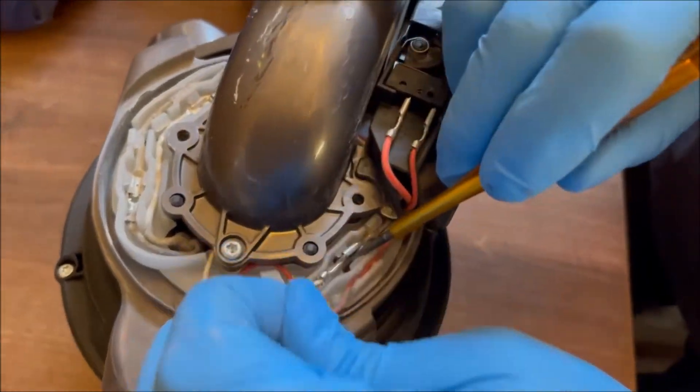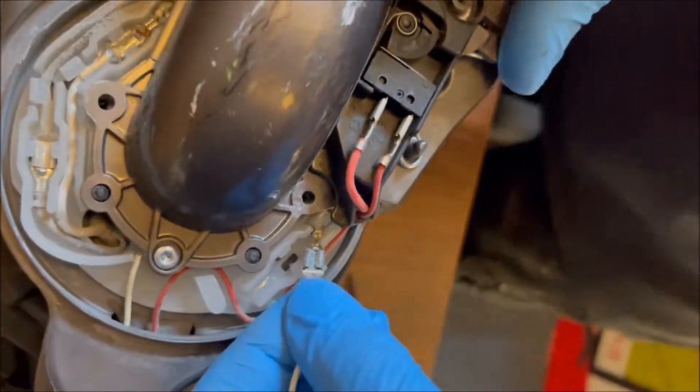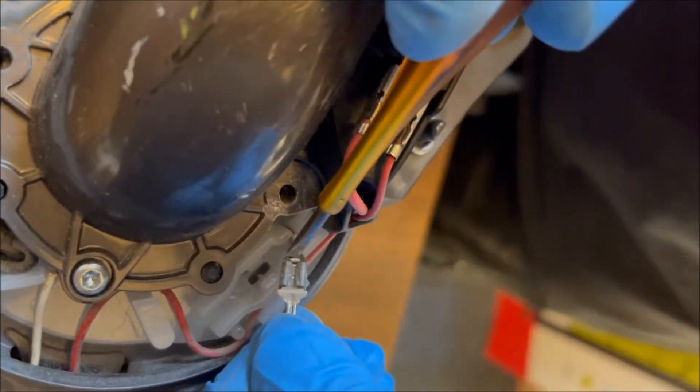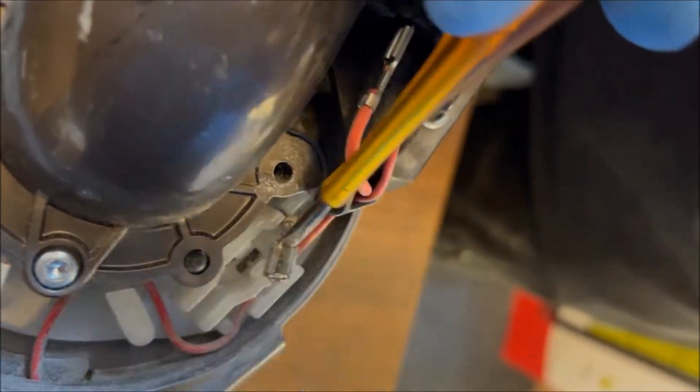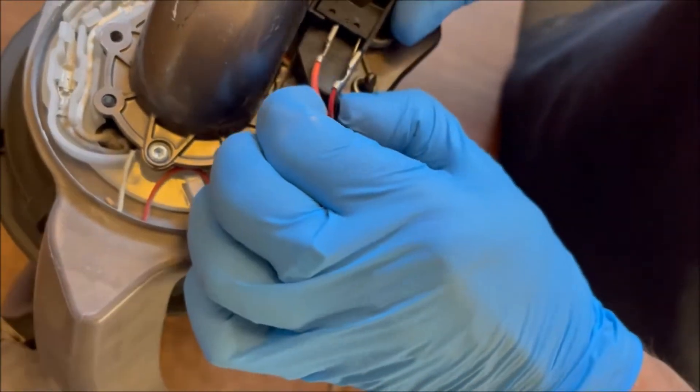You can see actually where the loom is broken there, the white wire. So you're releasing that spade like that. Take the other one off the macro switch.